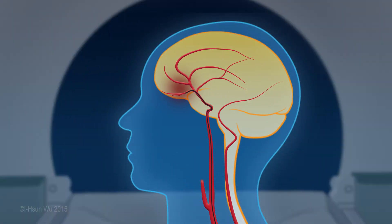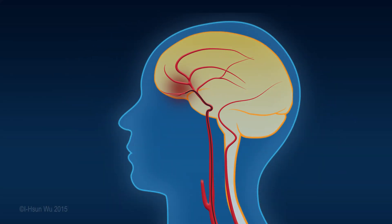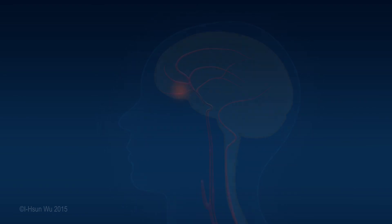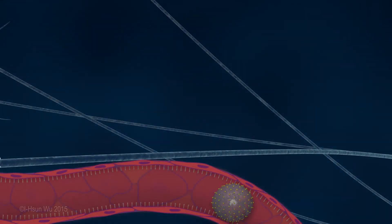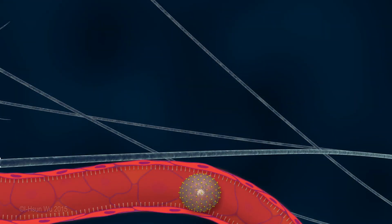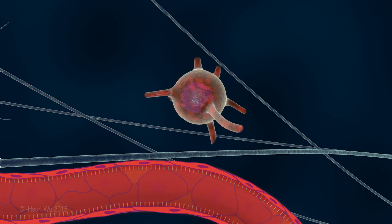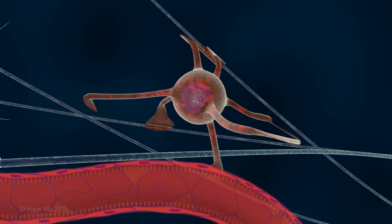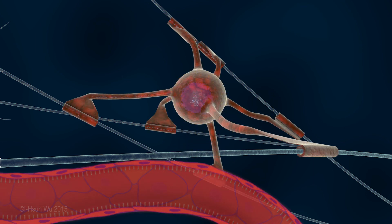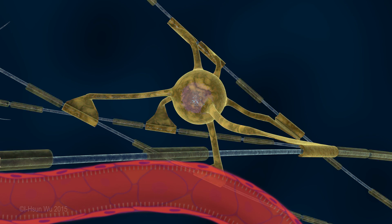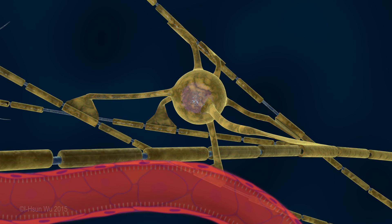With MRI guidance, the engineered glial progenitors can be injected to the ideal site. These progenitors will adhere, go through the blood vessel wall to the damaged site, and grow into oligodendrocytes, forming new myelin. This may regenerate the damaged brain tissue and improve the neurological condition and quality of life for brain tumor patients following radiation.